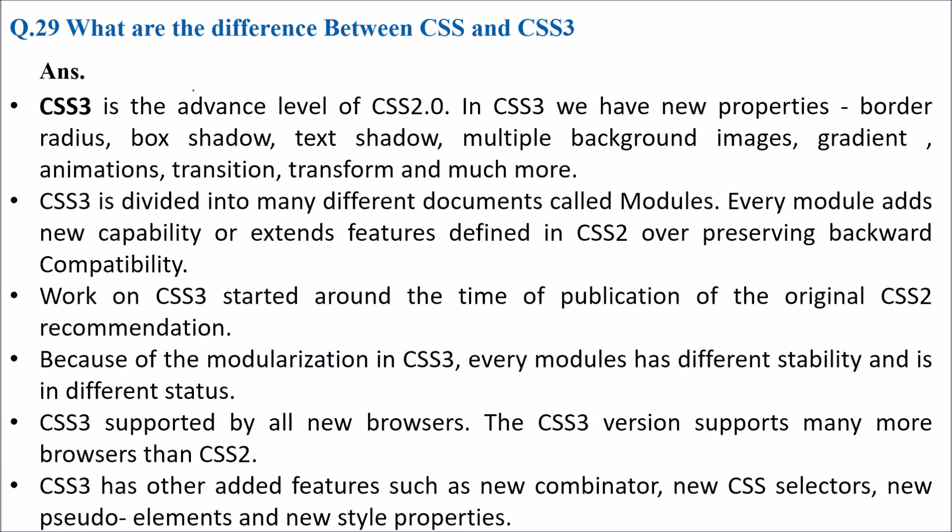What is the difference between CSS and CSS3? CSS3 is an advanced level of CSS2. In CSS3 we have new properties like border-radius, border shadow, text shadow, multiple background images, gradient, animation, transition, transform and much more. CSS3 is divided into modules, every module adds new capability and extends features defined in CSS2 while preserving backward compatibility.